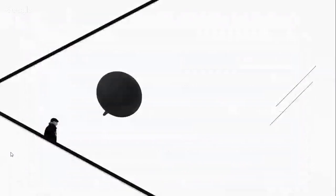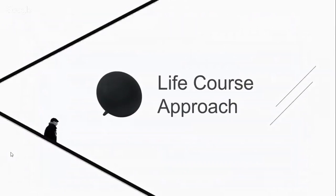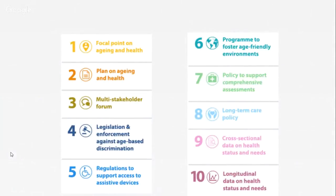Next, let's talk about the life course approach. According to WHO, the life course approach aims at increasing the effectiveness of interventions throughout a person's life. This means it focuses not just on people who are over 60 or 65, but on a person's whole life from birth to death. In recent years, WHO also set up 10 midterm progress indicators as part of the Global Strategy and Action Plan on Aging and Health.